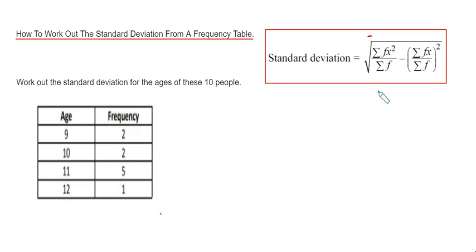We need to work out the standard deviation for the ages of these 10 people. Our ages would be x and our frequency would be f. The first thing we need to do is work out sigma fx.